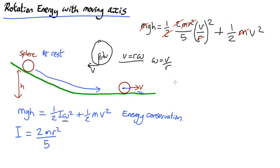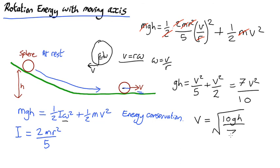So we have gh equals, so that's just v squared over 5 plus v squared over 2, equals 7v squared over 10. So the velocity at the bottom is equal to root 10gh over 7.